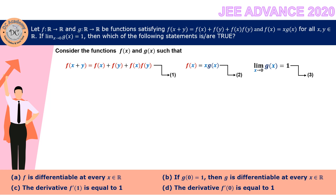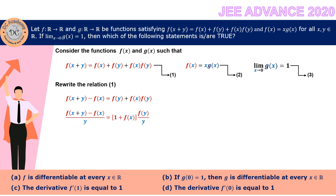For option A, we need to test the differentiability of the function f. We rewrite relation 1 in the respective form: f(x+y) - f(x) = f(y) + f(x)·f(y). We then divide both sides by y, giving us [f(x+y) - f(x)] / y on the left-hand side.